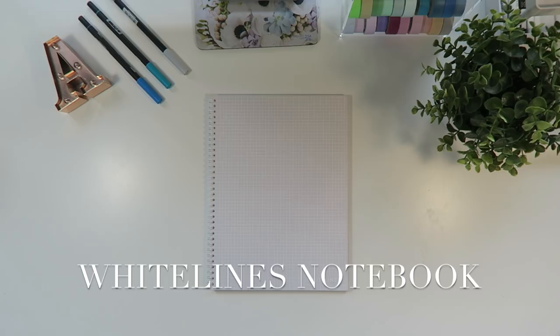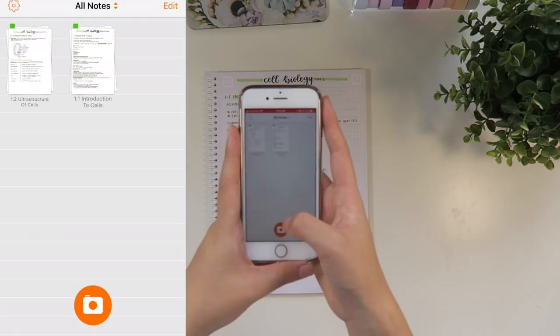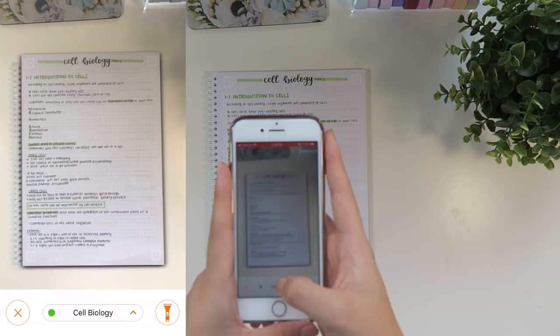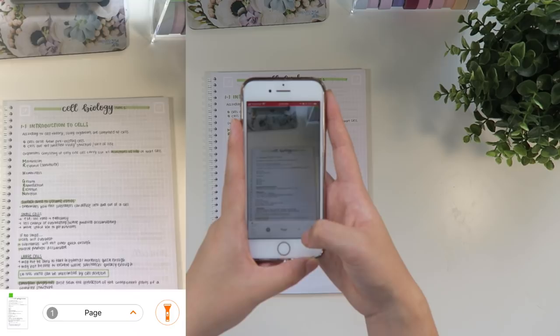So those are all the notes that I've written for today, but I just wanted to share with you the notebook that I was using. It's called White Lines Notebook and it's actually gray paper with white lines on it. And the really cool thing about this is if you download the app onto your phone, you can scan your notes onto your phone straight away as I'm doing right now. So once the photo has been taken, they'll save onto the app.